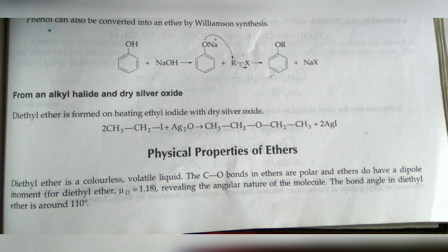The electron density increases due to the lone pairs, giving a pull to the C-O bonds and resulting in bond angle formation. The C-O-C bond angle is 110 degrees. This is because of the polarity created in the C-H bonds and the lone pairs on oxygen.